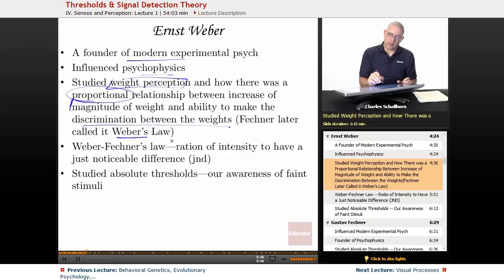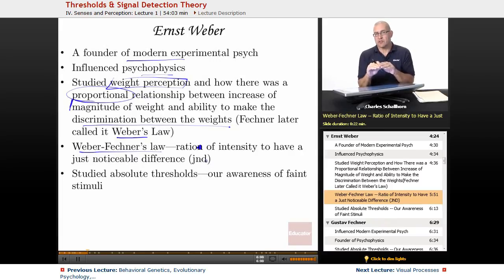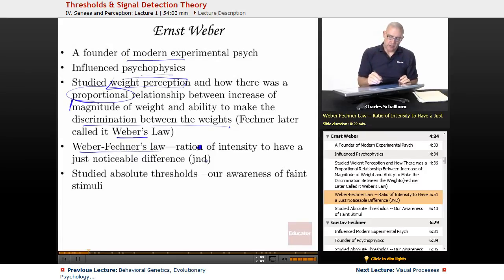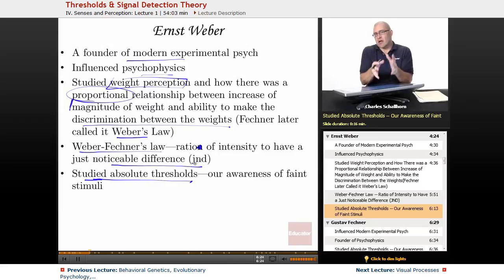A guy named Fechner came up with the idea later and called it Weber's Law. Weber-Fechner's Law, or Weber's Law, is the ratio of intensity needed to have a just noticeable difference — one of your vocab terms. Just noticeable difference is the degree to which something has to change for us to notice the distinction between two levels. Weber studied not only absolute thresholds but also, with Fechner, the just noticeable difference, noting that proportions are going to differ across vision, sound, brightness, and other sensory modalities.